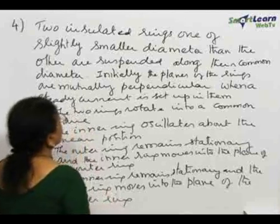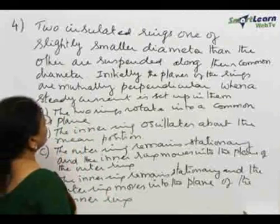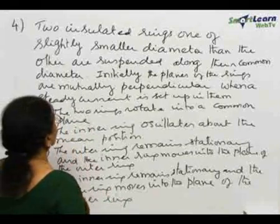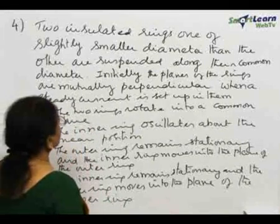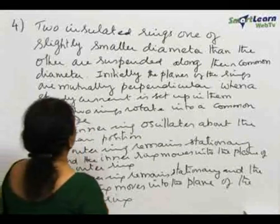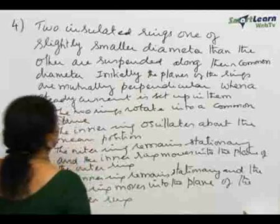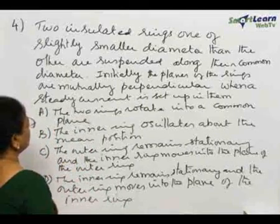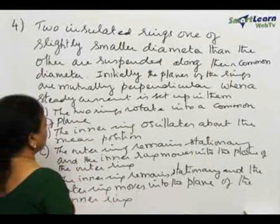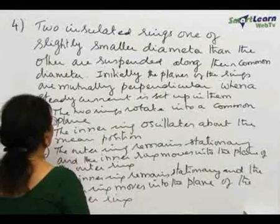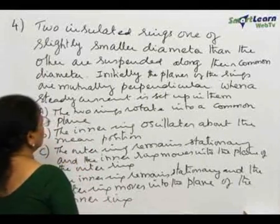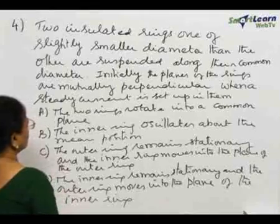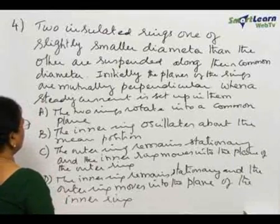Problem 4. Two insulated rings, one of slightly smaller diameter than the other, are suspended along their common diameter. Initially, the planes of the rings are mutually perpendicular.